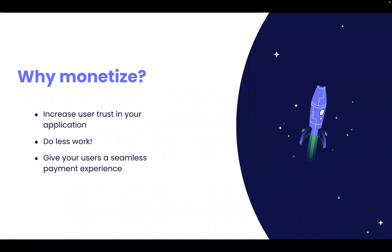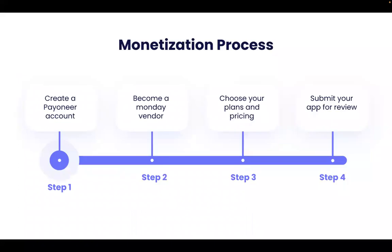All of this gives our users a seamless payment experience, saving them the step of having to navigate to another platform to subscribe to your application. And it's also quite easy to implement — it really boils down to these four steps. First, you'll create a payout in your account, which is how you'll receive your earnings each month. You'll also fill out a quick form to become a Monday vendor. In the third step, you'll come up with the different plans you'd like to offer and at what price, as well as build the business logic that can interact with our platform. And lastly, you'll submit your app for review.